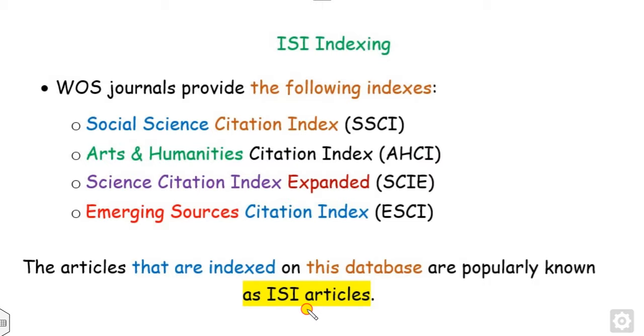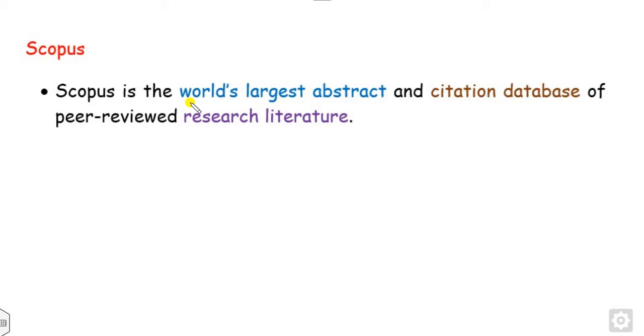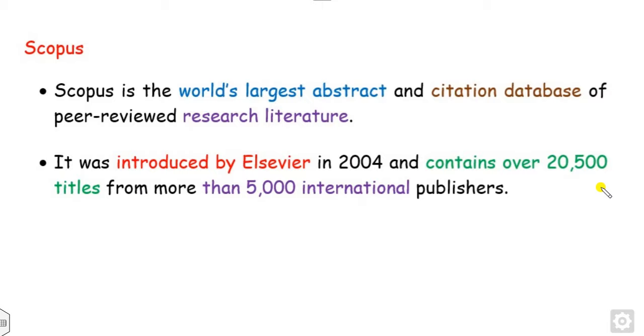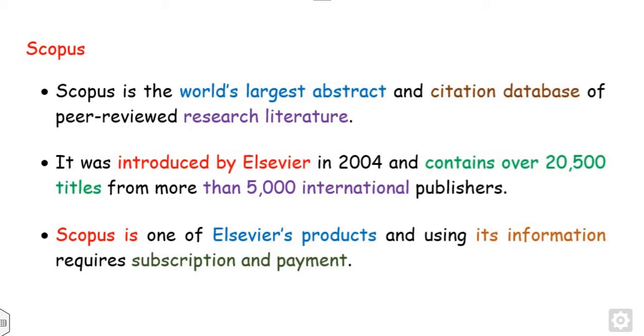On the other hand, what is Scopus? Scopus is the world's largest abstract and citation database for peer-reviewed research papers. It is a product of Elsevier launched in 2004 and contains more than 20,000 titles from more than 5,000 publishers. It is one of Elsevier's products, so you need a subscription or payment to access their license.